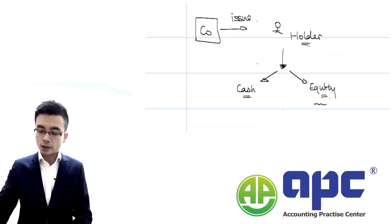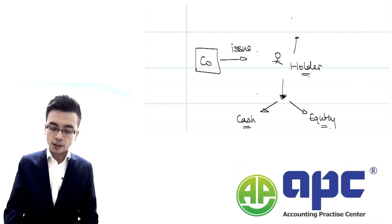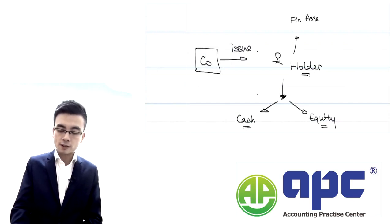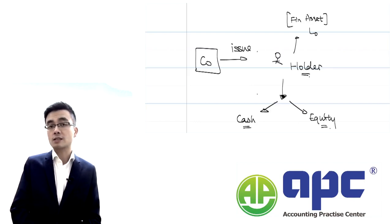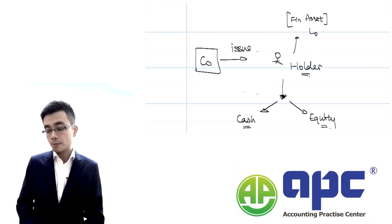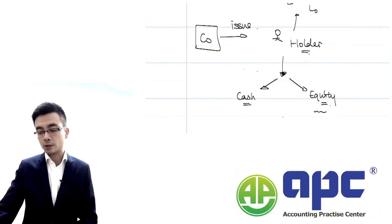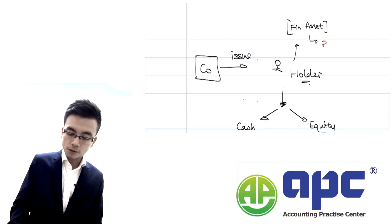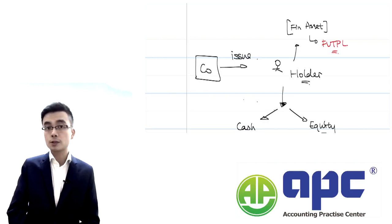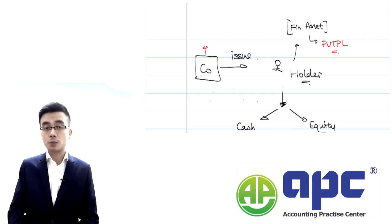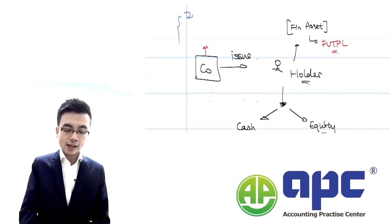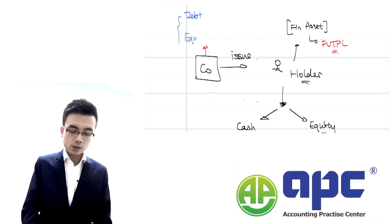From the holder's point of view, that would be a financial asset because it's an example of investment in debt instruments. But it does not pass the contractual cash flow characteristics test, because it not only contains interest and a redemption element, but also an equity element. As a result, that would be measured at fair value through P&L. For the company that issues the compound financial instrument, from IAS 32's point of view, we split it into the debt or liability element and the equity element.